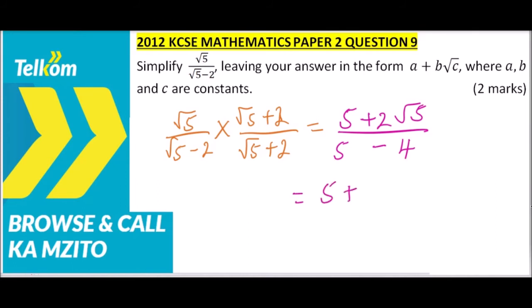5 minus 4 is 1. When you divide by 1, it remains the same. Therefore, we have simplified that expression, where we can now say our a is 5, our b is 2, and our c is 5, because that is the way we are supposed to write that expression.